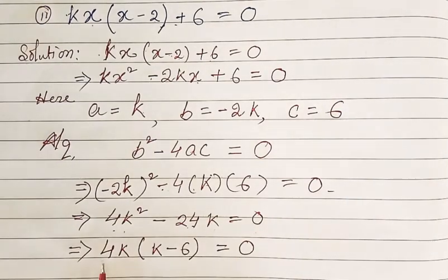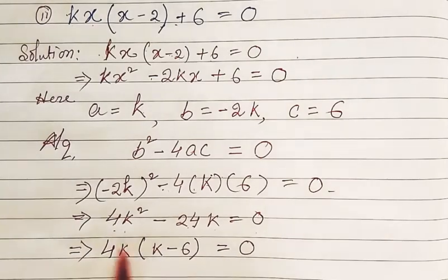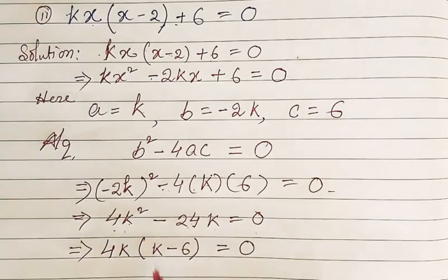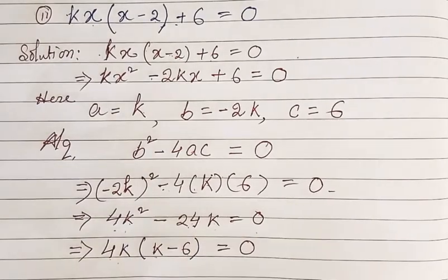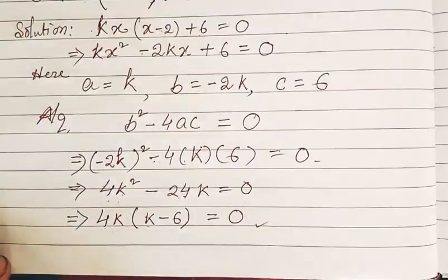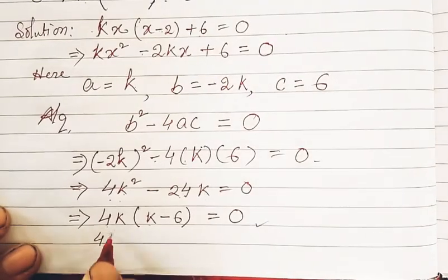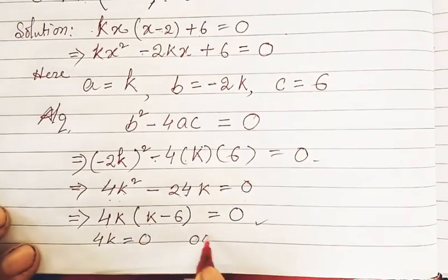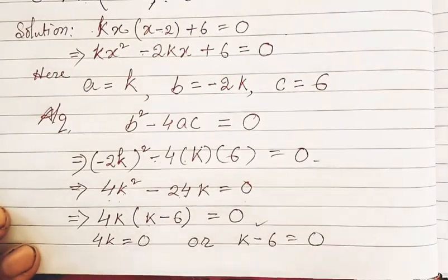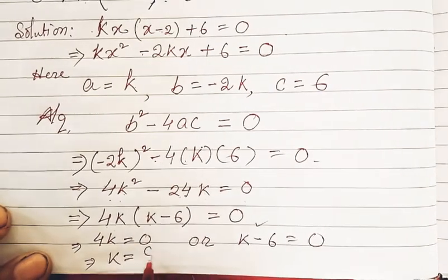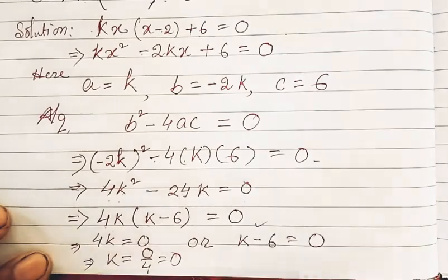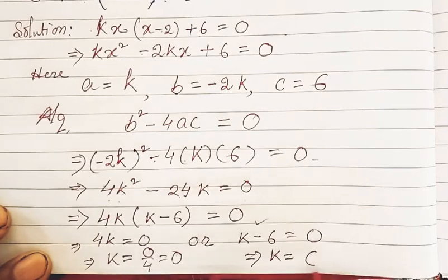Factoring out 4K gives: 4K(K - 6) = 0. So either 4K = 0, giving K = 0, or K - 6 = 0, giving K = 6.